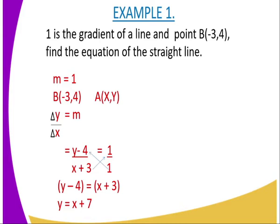You will say change in y over change in x equals gradient. Therefore, change in y is given by (y - 4), and change in x is (x - (-3)), and therefore it becomes (x + 3) equals 1 over 1.